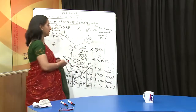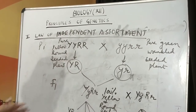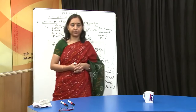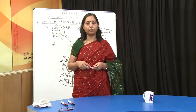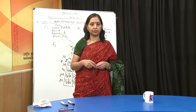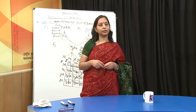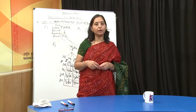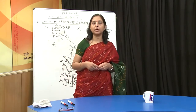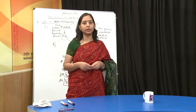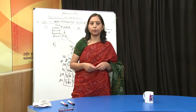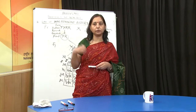As per the law of independent assortment, even when two characters are taken into consideration, the sorting out takes place quite independently and all possible combinations are found in the progeny. These were the three laws given by Mendel after he studied Pisum sativum, or garden pea. After that, more scientists gave many theories and postulates based on different experiments, and these postulates were quite different from Mendel's theories. Mendel's laws still hold a lot of weightage, but many scientists found deviations and gave their own laws.